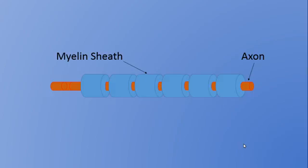This is a schematic of a typical peripheral nerve. We have the axon, which is the central wire of the nerve, and this transmits the signal along it. And we have around it a protective myelin sheath, and this sheath makes sure that the speed of conduction is optimal.